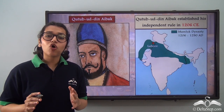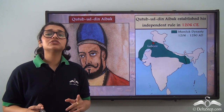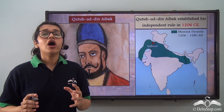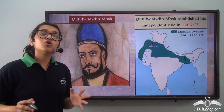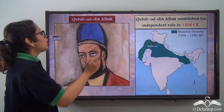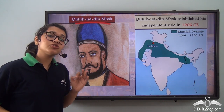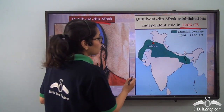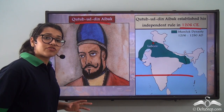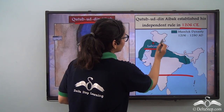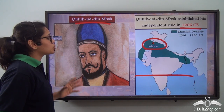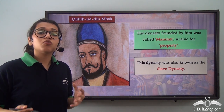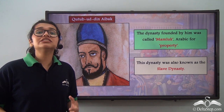We're going to learn about the Slave or the Mamluk dynasty, which was the first of the five dynasties in the Delhi Sultanate. After Muhammad Gauri's death, his slave Qutubuddin Aibak established independent rule in India in the year 1206 CE. Lahore was their capital at that time — Delhi was not the capital during Qutubuddin Aibak's reign. The dynasty founded by him was known as the Mamluk or the Slave dynasty.